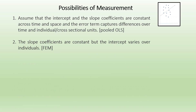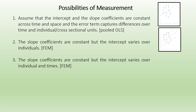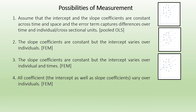The slope coefficients are constant but the intercept varies over individuals. We are having three different intercepts but the slopes are constant. This model has been discussed in my previous video. Kindly refer to my playlist where you can see the fixed effects models for the cross-section unit. Now, we talk about the slope coefficients being constant but the intercept varying over the individual and time. The fourth model has all coefficients — both intercept and slope coefficients — varying over individuals.